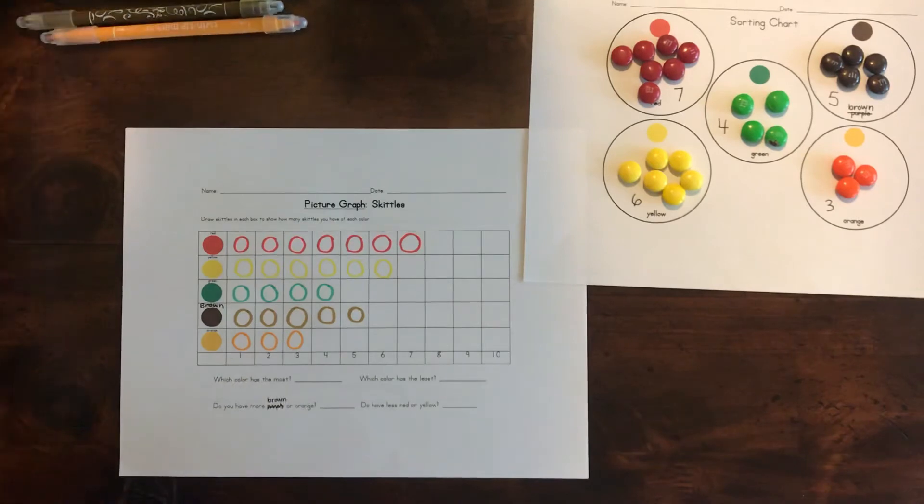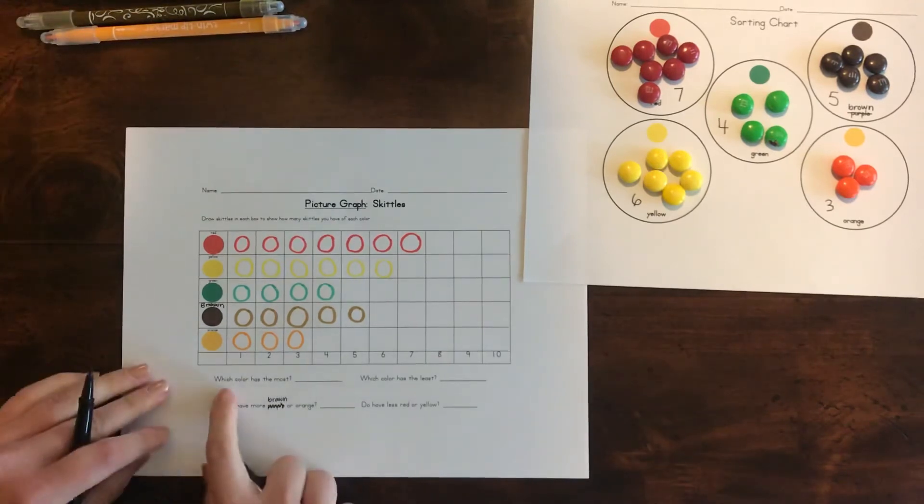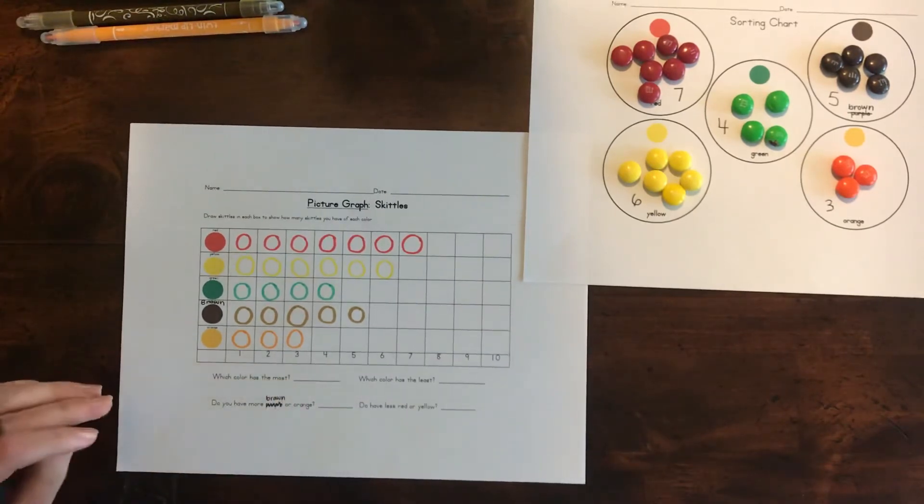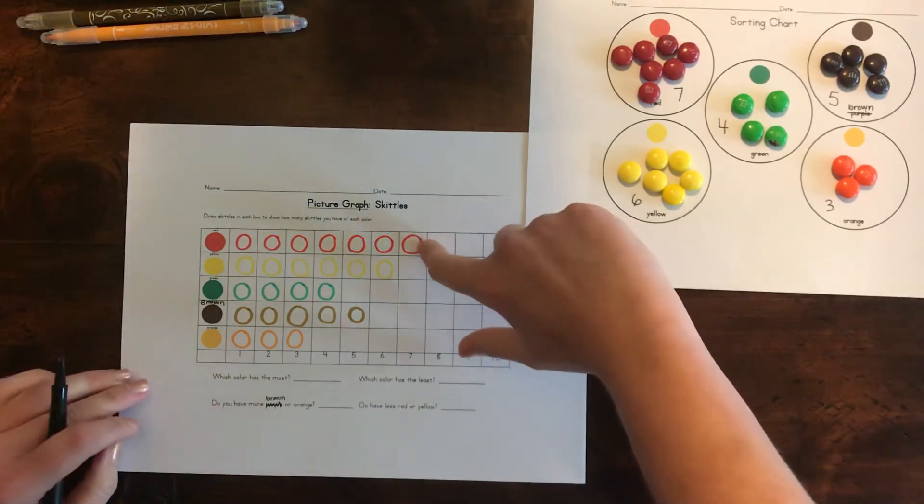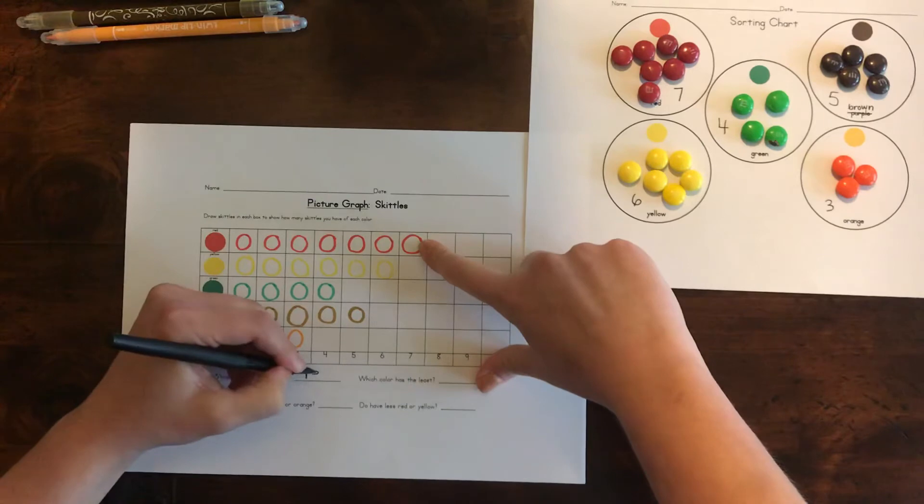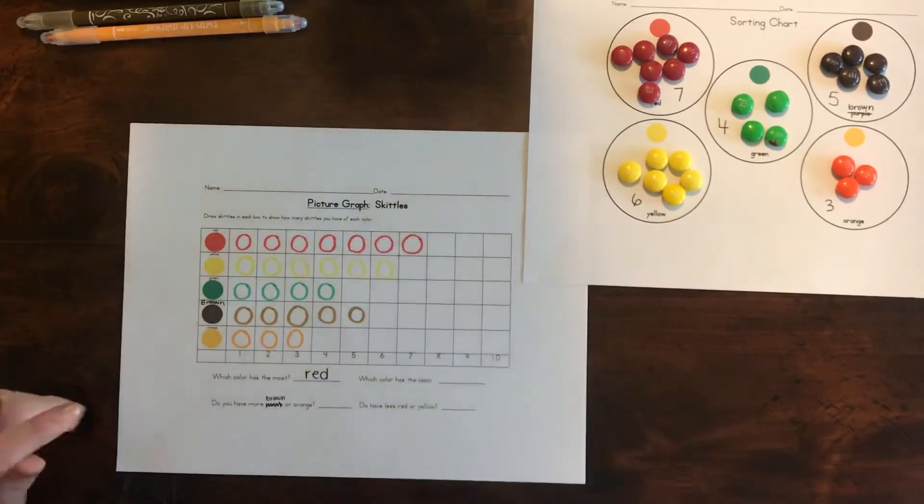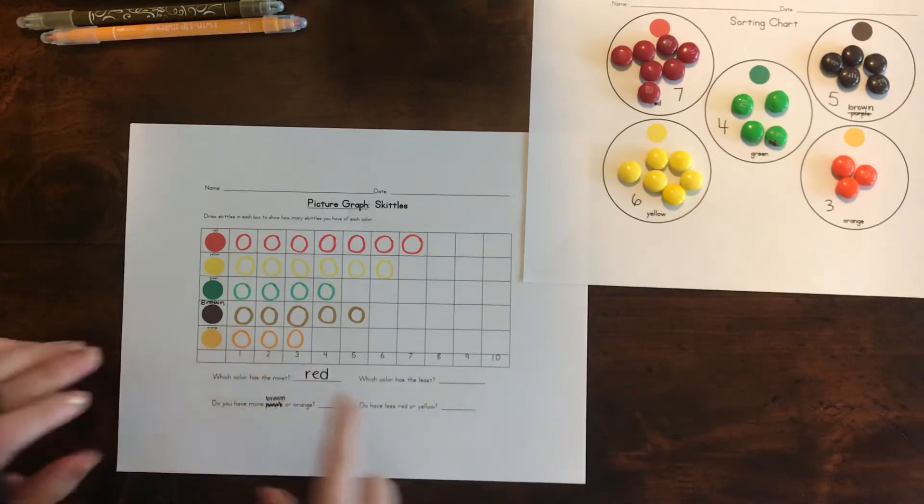Now we have some questions at the bottom. This one says, which color has the most? So can you look at this graph quickly and decide which one has the most? I think it's red. So we're going to write red right there.